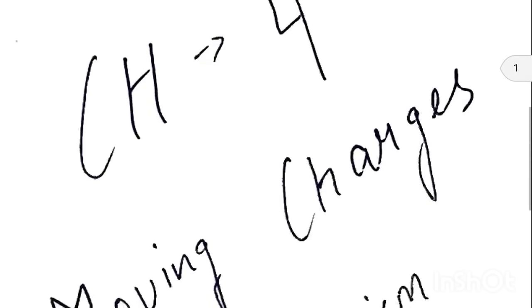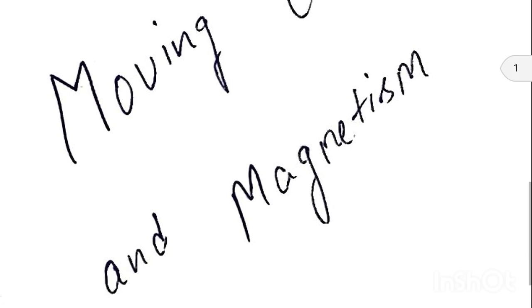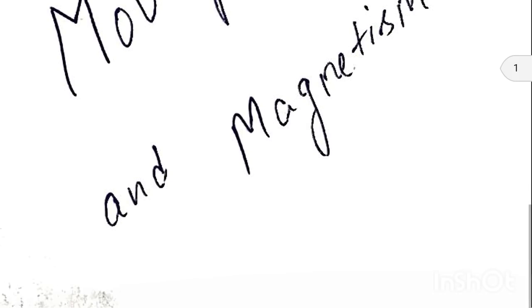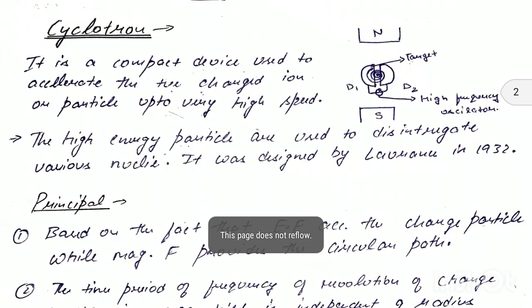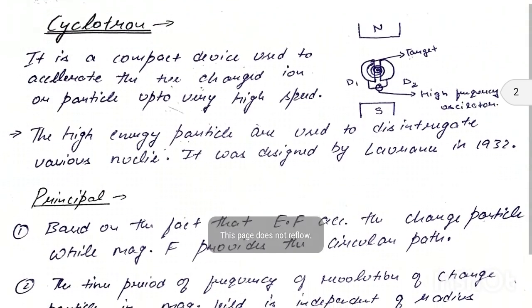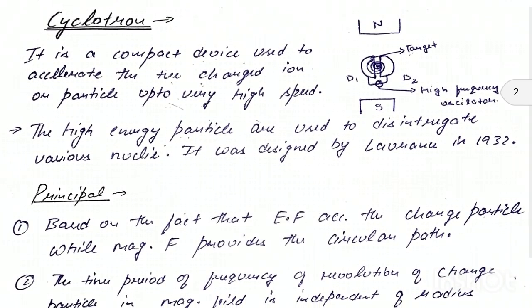In this video we will discuss the second part of chapter 4 of class 12 physics, that is moving charges and magnetism. The first topic is cyclotron. Its definition: it is a compact device used to accelerate positive charged ions or particles up to a very high speed, and it was designed by Lawrence in 1932.